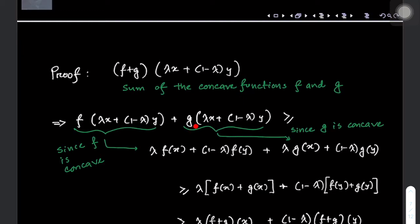Since f and g are individually concave functions, we can apply the definition of a concave function to each. This gives us that f at the linear combination is greater than or equal to the corresponding linear combination of f's values, and similarly g at the linear combination is greater than or equal to the corresponding linear combination of g's values. As a result, their sum is going to be greater than or equal to the given aggregate expression.